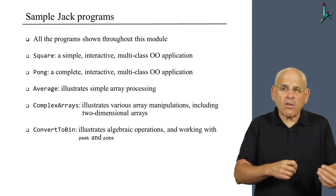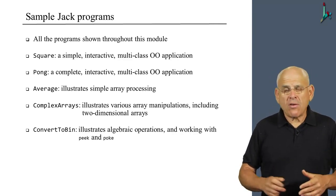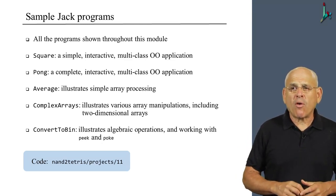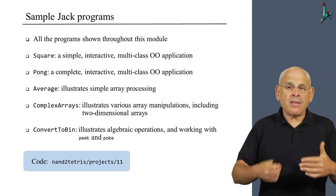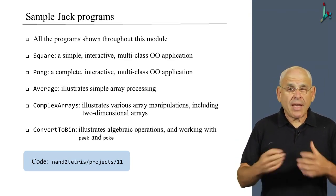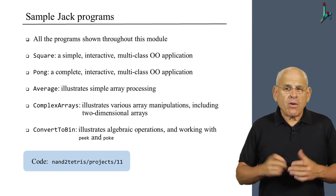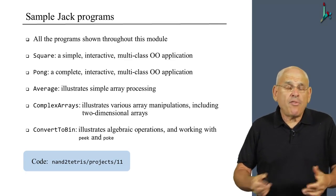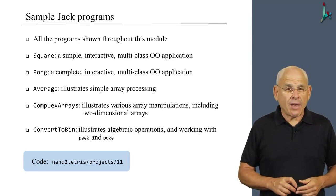Then there's a set of programs - average, complex arrays, and convert bin - that are supplied as part of project 11. We are now in this module going to do project 9. But if you want, you can go to the project 11 directory and take a look at the code of these programs also. These programs are used in the context of developing the compiler as test programs, but you can certainly look at them also in the context of project 9 if you want to see more examples of Jack programming.